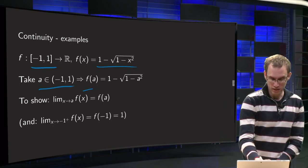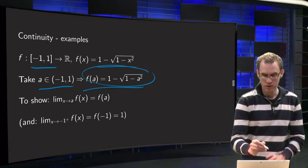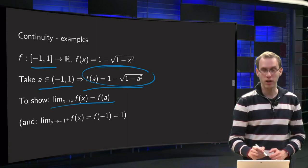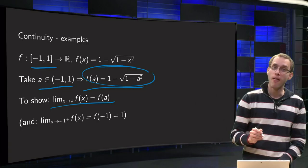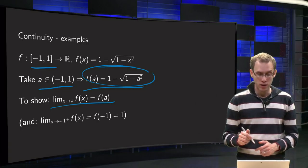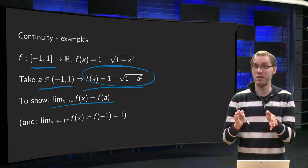So first we take the interior. We pick some a in the interior and we know f of a equals 1 minus square root of 1 minus a squared, and we have to show that the limit x to a of f of x equals this limit. So that is the first task.